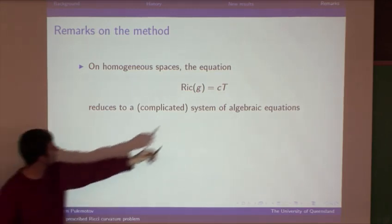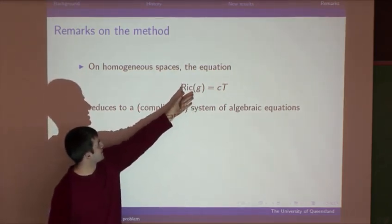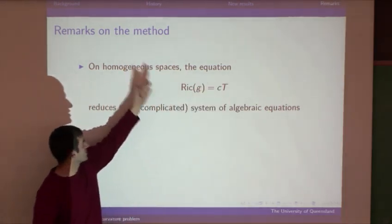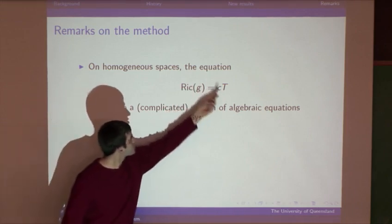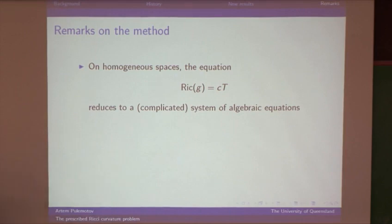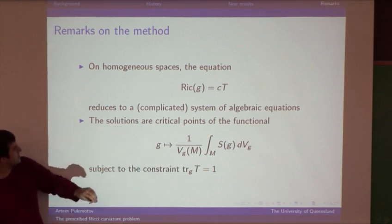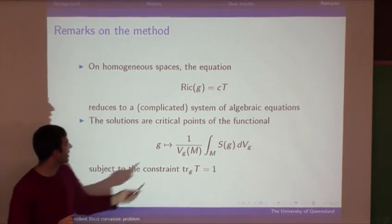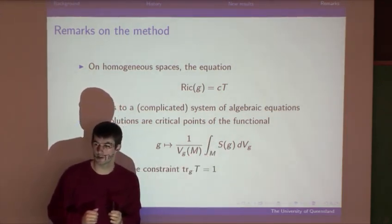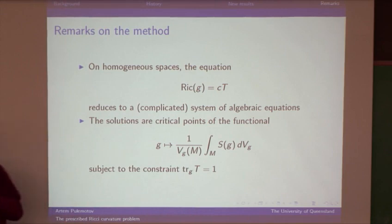The prescribed Ricci curvature equation is similar to the Einstein equation in a number of ways. Just like the Einstein equation, the prescribed Ricci curvature equation on homogeneous spaces reduces to a system of algebraic equations, and you can use variational methods to solve it. I was able to show that on a homogeneous space, a Riemannian metric satisfies Ricci(G) = CT if and only if it is a critical point of the normalized total scalar curvature functional subject to a constraint that involves the tensor T. This variational characterization underlies the proof of the main theorem.